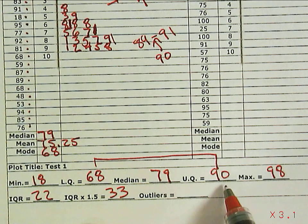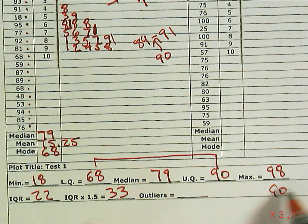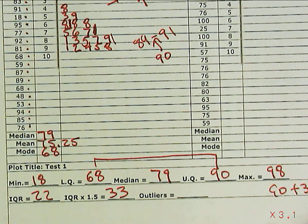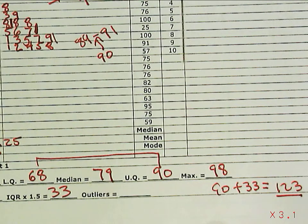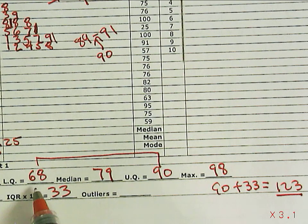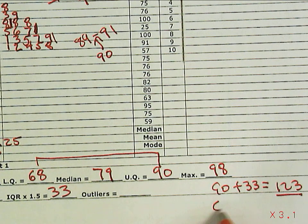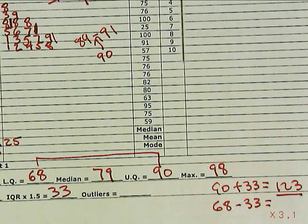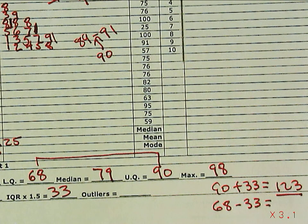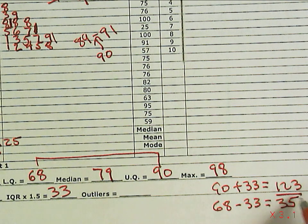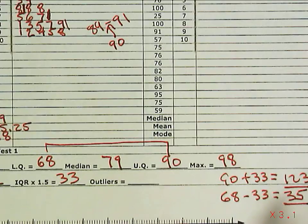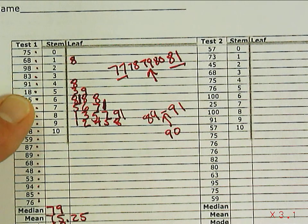We use that to determine if there are any outliers. We take that 33 and add it to 90. So 90 plus 33 is 123, so anything above 123 would be an outlier. We subtract that 33 from 68, so 68 minus 33 gives us 35. So anything below 35 in our data set is an outlier.